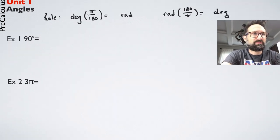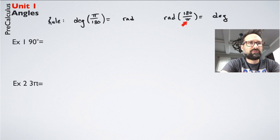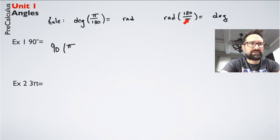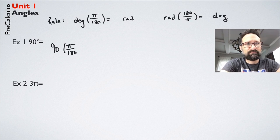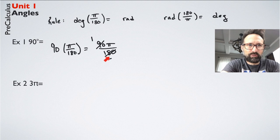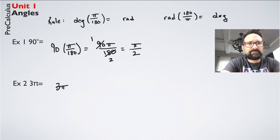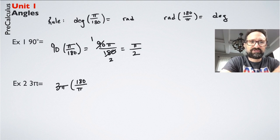To go from radians to degrees, multiply the radian measure by 180 over pi — that gives your degree measure. If there's a pi involved it will cancel out, which is nice. For example: 90 degrees times pi over 180 equals 90pi over 180, which reduces to pi over 2. You could give a decimal answer, but most often the answer is in fraction form.